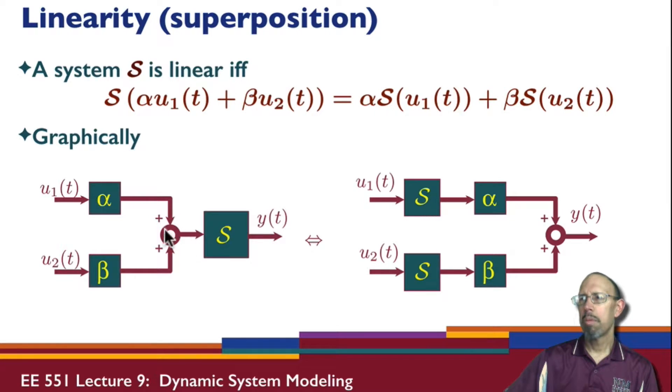Over here we have the individual inputs operated on by copies, identical copies of the system, then we scale them by the same scalar values and add them. So if the output is the same in either case, then the system is linear.